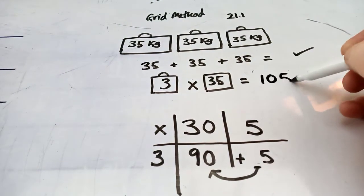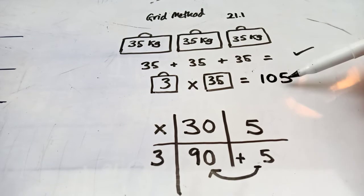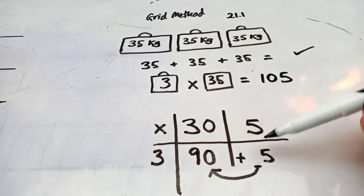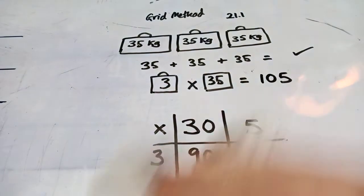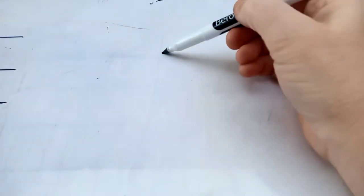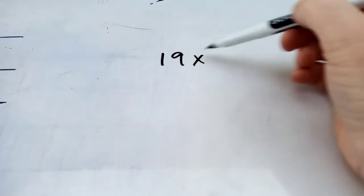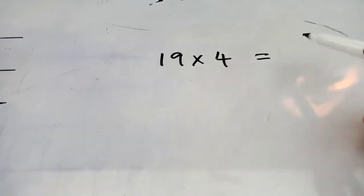So, the answer to that problem and that calculation can be worked out using this method here, which is called the grid method. Okay? I'm going to do one more example. I'm not going to draw the problem this time. I'm just going to give you the calculation. Let's say it was 19 times by 4.